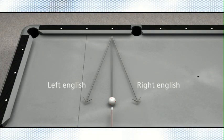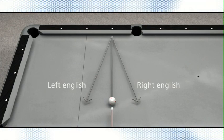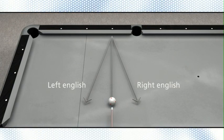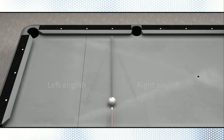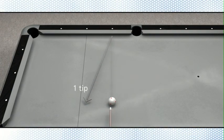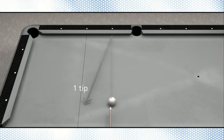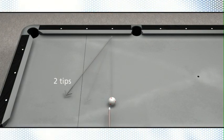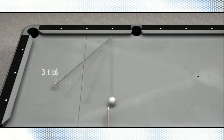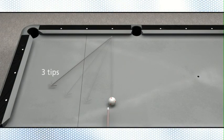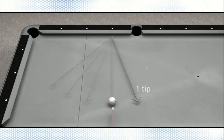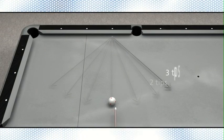Predicting how much English will alter the natural roll of the cue ball is simple. Each diamond represents one tip of English. If you put on one tip of left English, the cue ball will travel one additional diamond to the left. Two tips will travel two diamonds, and three tips will travel three diamonds. The same applies to right English, each tip of English representing an additional diamond.